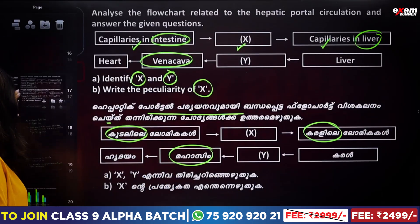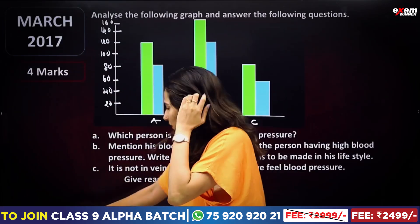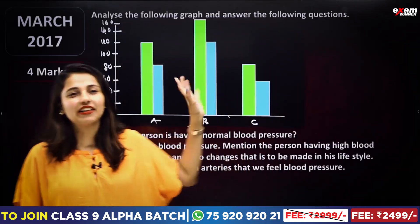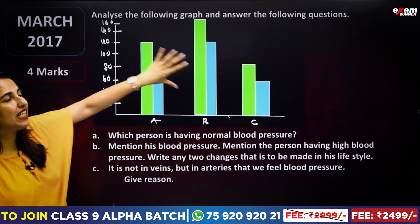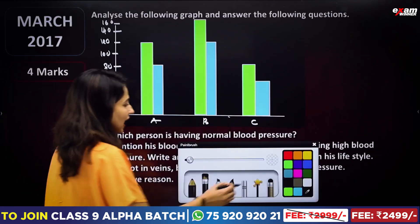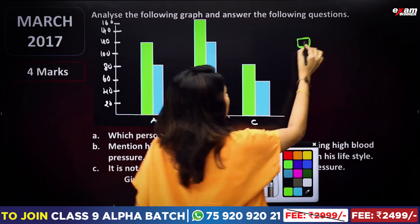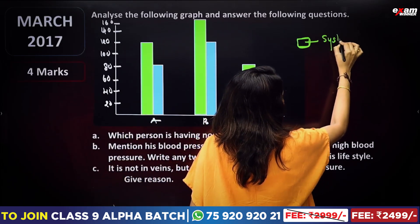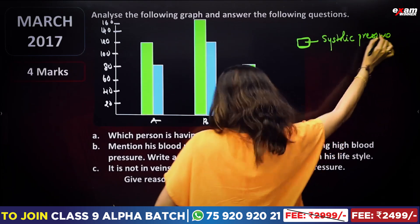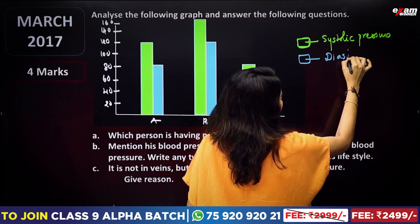Here is another question. We have a graph here. In Malayalam medium or English medium, this is a graph. The white color here is systolic pressure. And here, this white color is diastolic pressure.